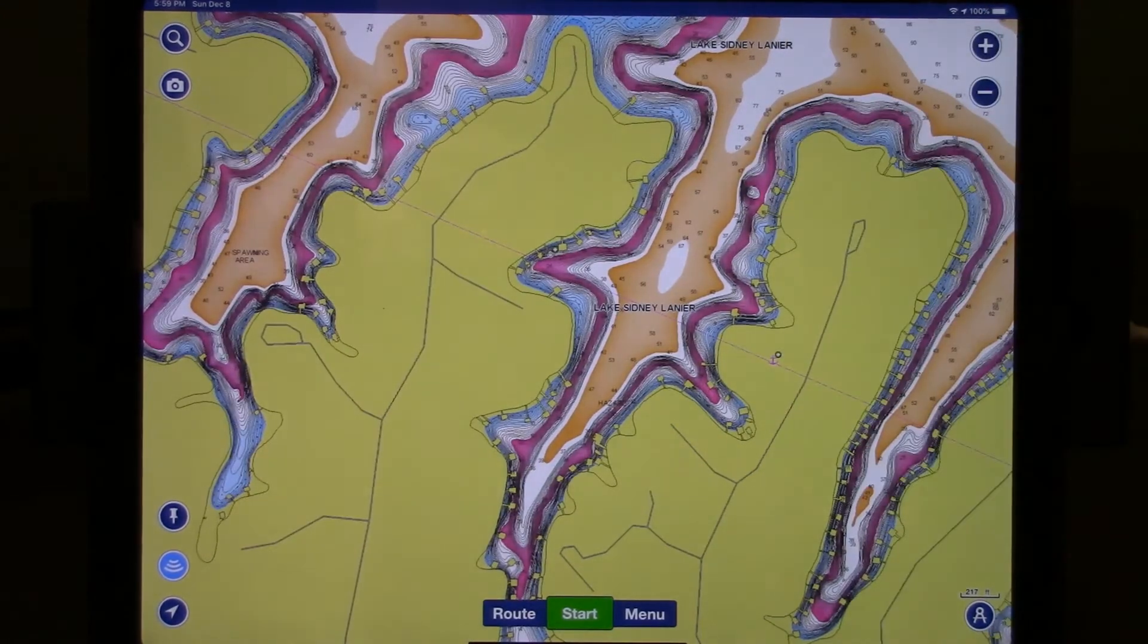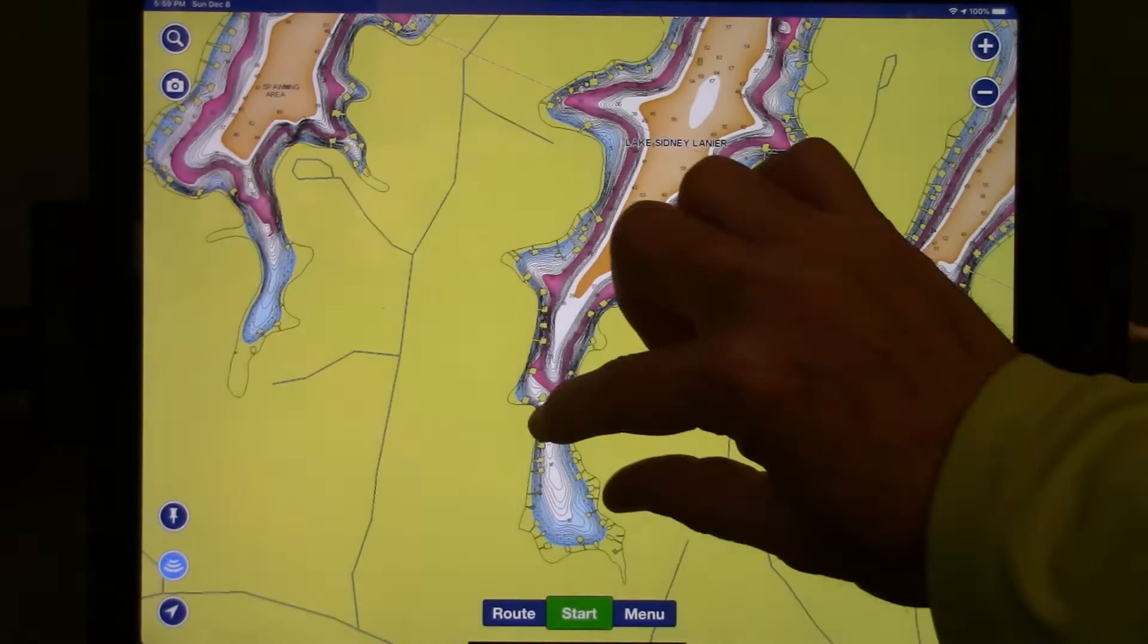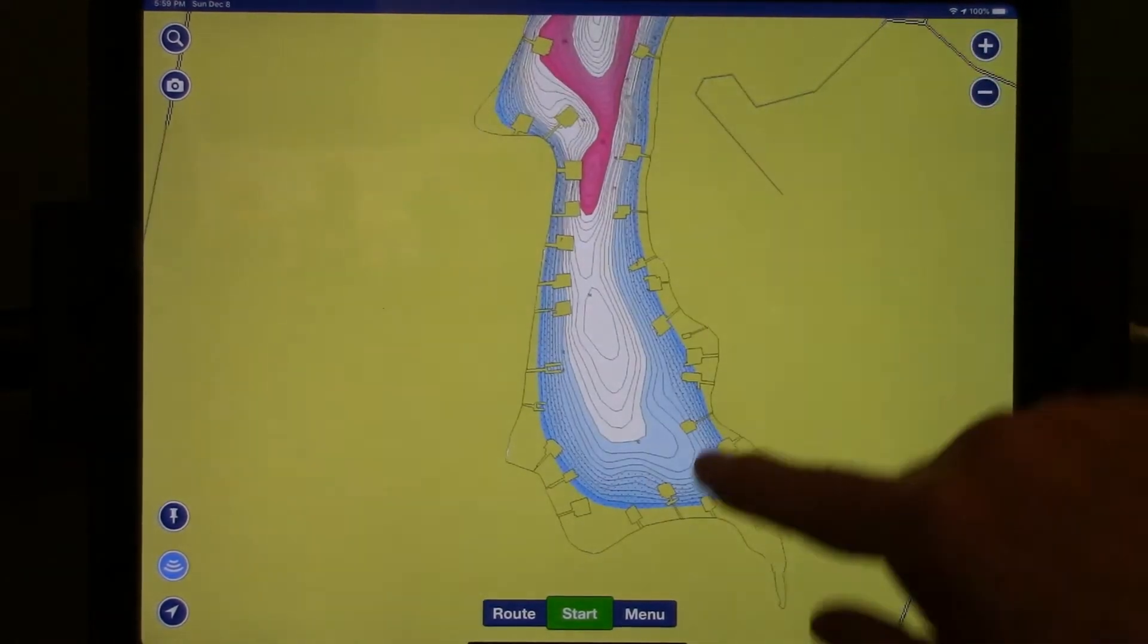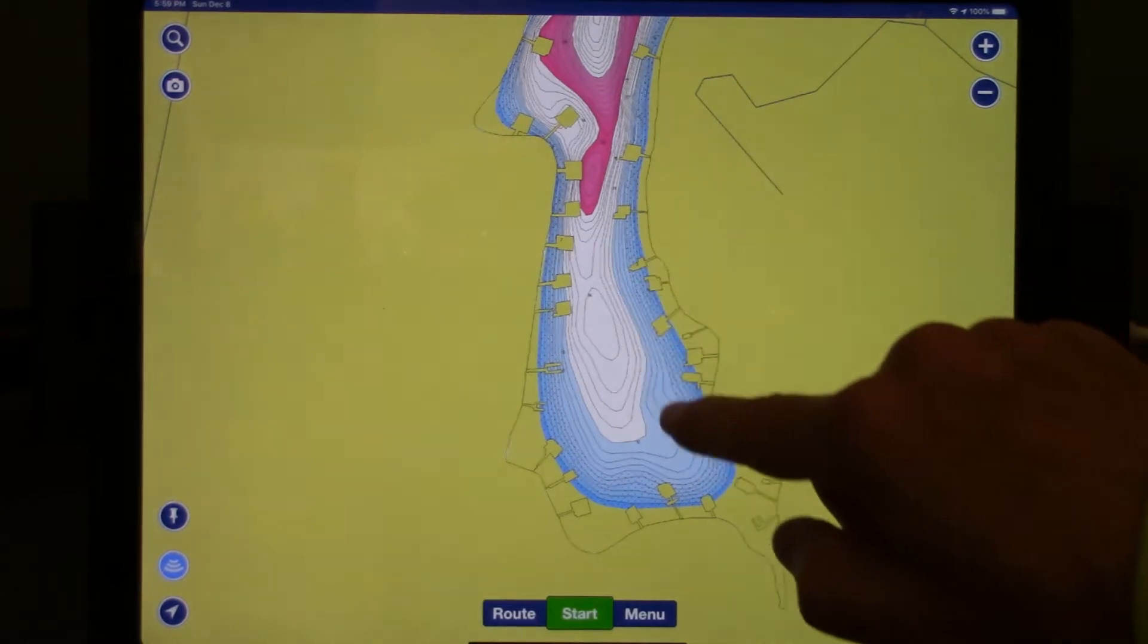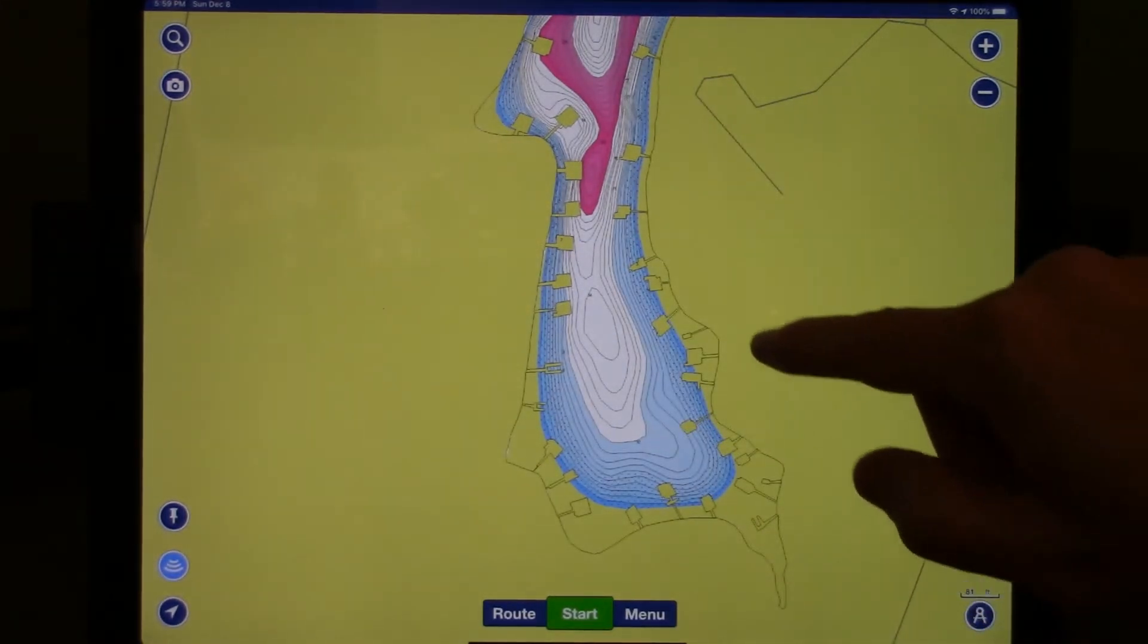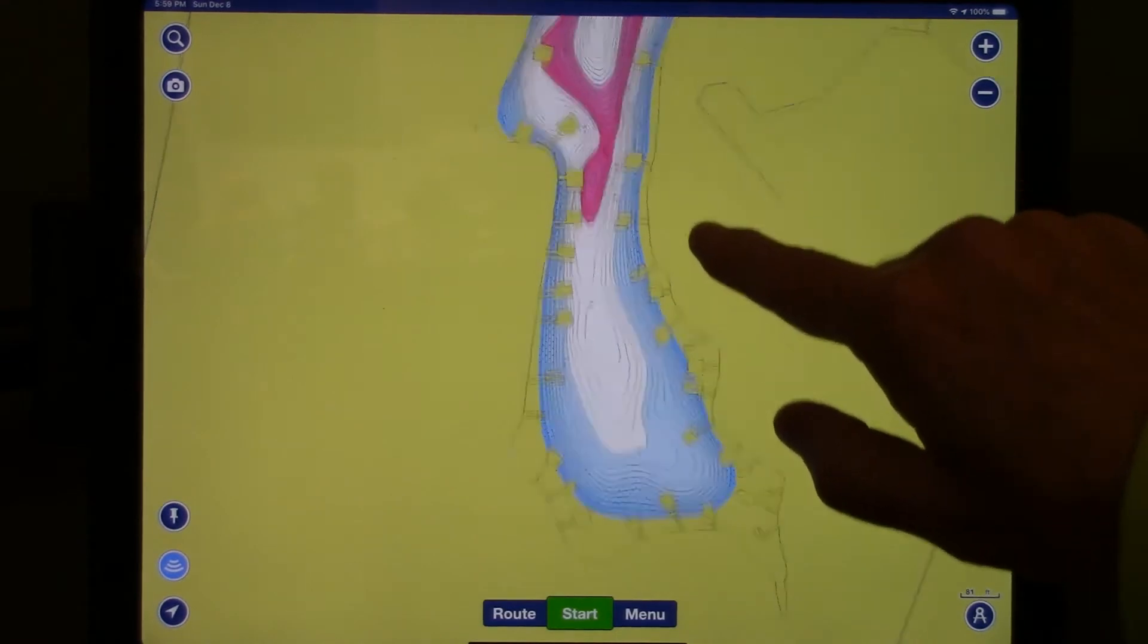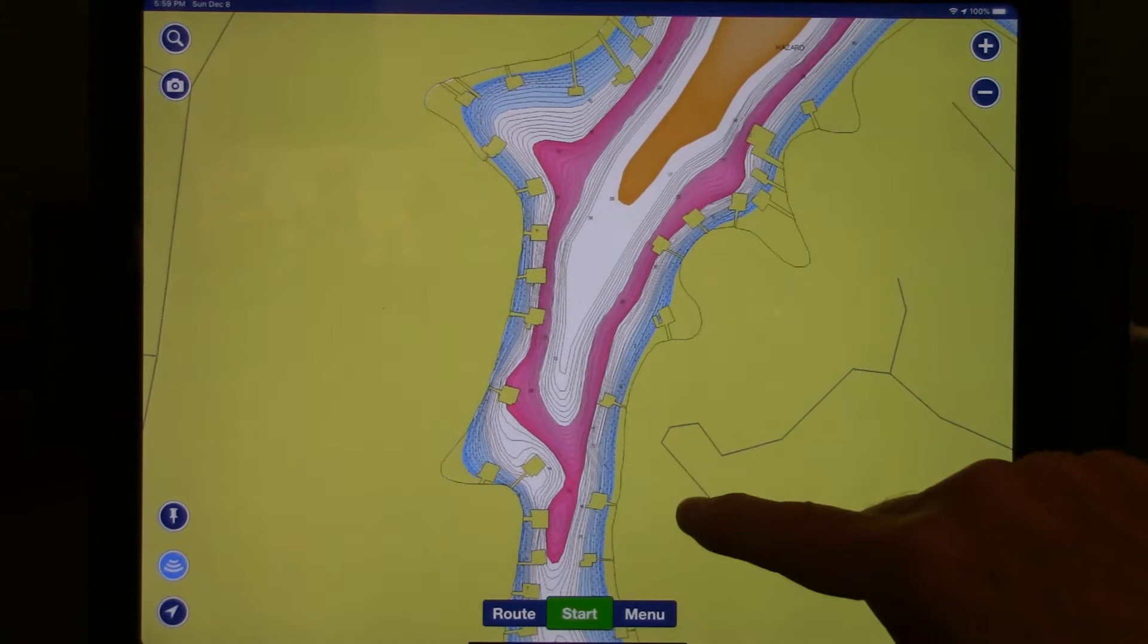Now as you'll recall, we highlighted the target fishing range in red, and we've highlighted channels in gold. If I look at this creek arm, one of the things you'll immediately notice is that there's a large number of docks that are not highlighted in red. That means if I'm searching that part of the lake, I'm probably wasting a lot of time.